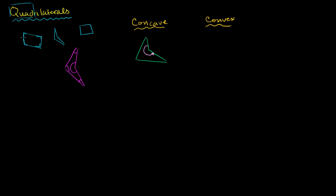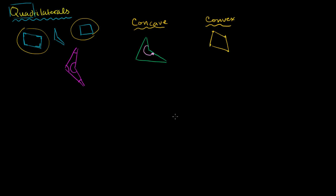But if all of the interior angles are less than 180 degrees, then you are dealing with a convex quadrilateral. A convex quadrilateral has four points, four sides, and four angles. Now within convex quadrilaterals, there are some other interesting categorizations, so now we're just going to focus on convex quadrilaterals.